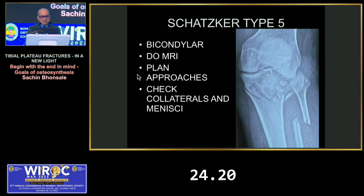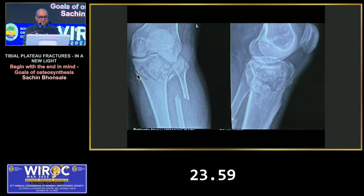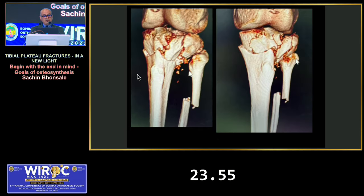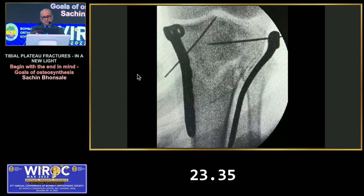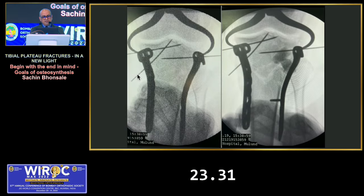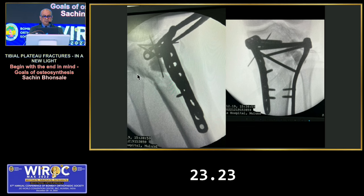Schatzker types 5 and 6 are bicondylar fractures; the difference is that metaphyseal-diaphyseal disjunction occurs in type 6. Always do an MRI scan in types 5 and 6, plan approaches beforehand, and check collaterals and menisci. One example of a Schatzker 5-6 fracture managed after a week for swelling to settle: simultaneous bilateral approaches medial and lateral, medial wire first to restore continuity, then lateral articular congruity, bone graft in the void, two plates clamped together with a pointed tooth clamp, completing fixation and restoring articular congruity.